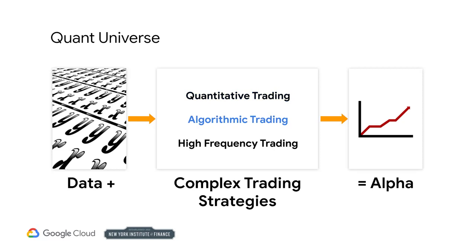Algorithmic trading is a type of quant trading that uses pre-specified machine executable instructions to determine the size and timing of trades based on a quantitative model of an asset's price behavior. Over 70% of US trading volume is algorithmic. Most of this volume is high-frequency trading, which we will discuss next.